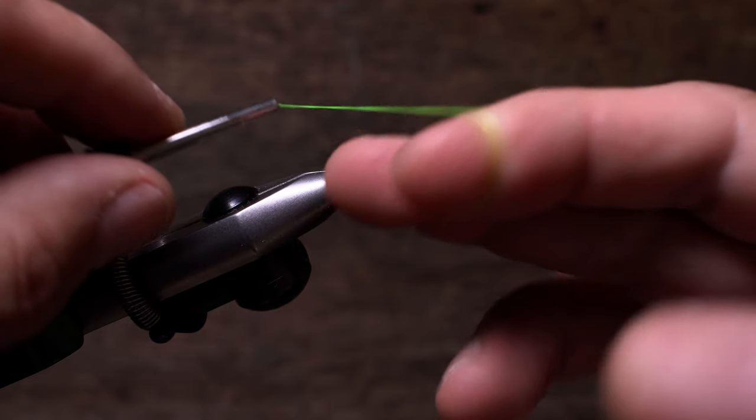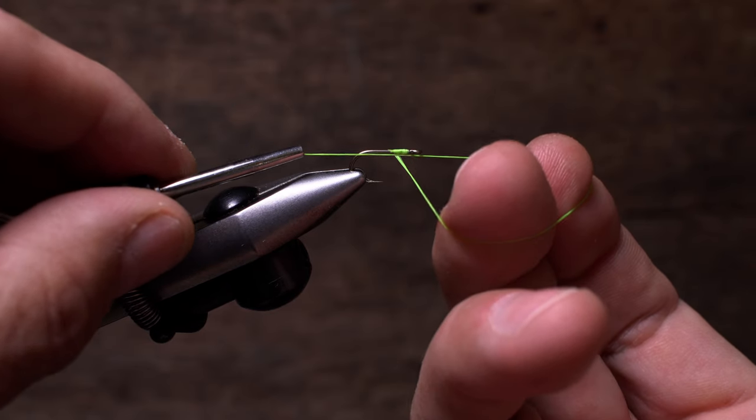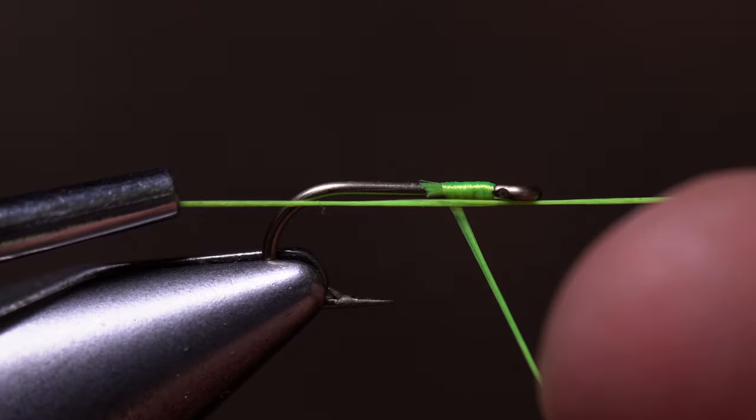Pull the bobbin up with your left hand and over top of your fingers as you rotate them until their pads face you. Try to keep the thread from your bobbin in line with the hook shank and the nozzle near the back of the hook.